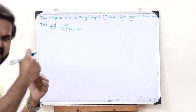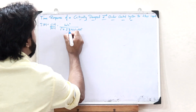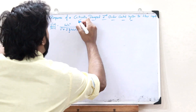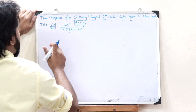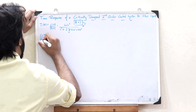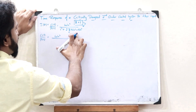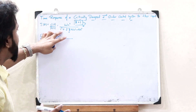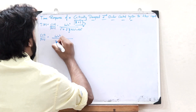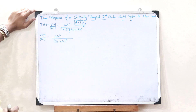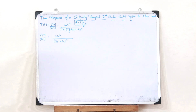In the case of a critically damped second order control system, the value of zeta is equal to 1. Upon substituting zeta = 1, we get C(s)/R(s) = omega_n squared divided by s squared plus 2·omega_n·s plus omega_n squared. This is of the form a squared plus 2ab plus b squared, which can be written as (a + b) squared — so the denominator becomes (s + omega_n) squared.